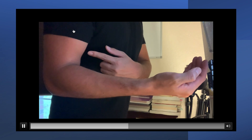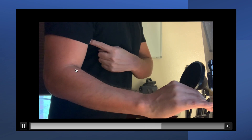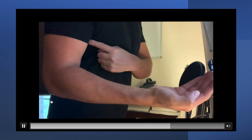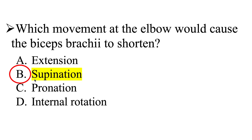Look at pronation — notice how the biceps brachii lengthen. Now look at supination — now they are shortened. So the correct answer is supination; this movement is going to shorten the biceps brachii. Pronation is going to lengthen the biceps brachii. And internal rotation is somewhat the same as pronation — we are internally rotating when we pronate at the forearm — so that is also not the correct answer.